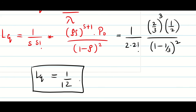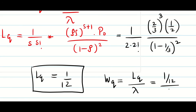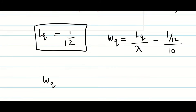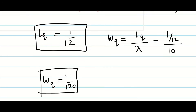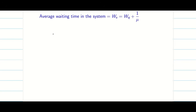From lq = 1/12 and λ = 10 per hour, wq = lq / λ = (1/12) / 10 = 1/120 hours. So we have now found both lq and wq.